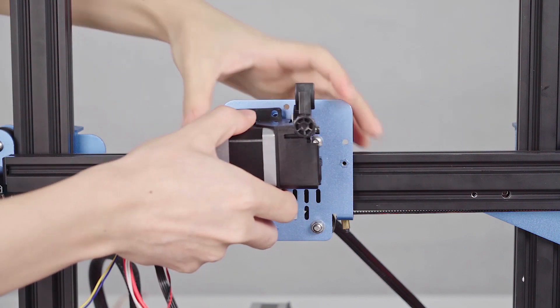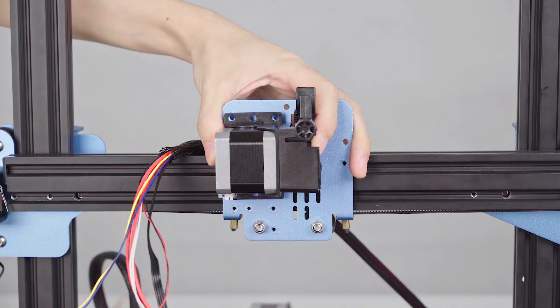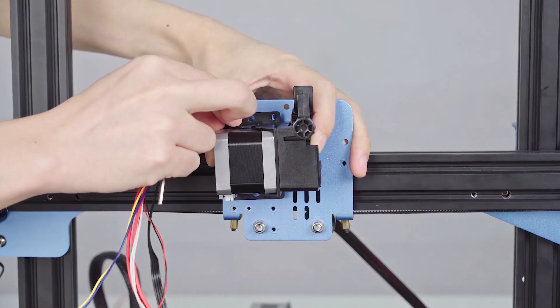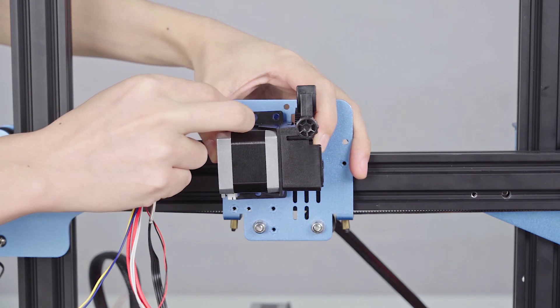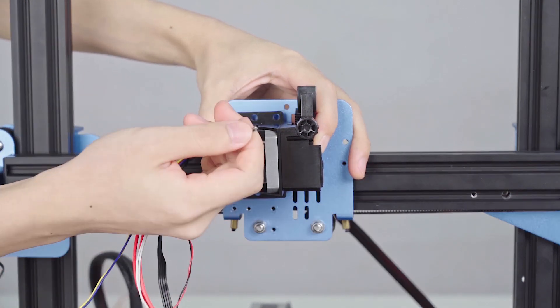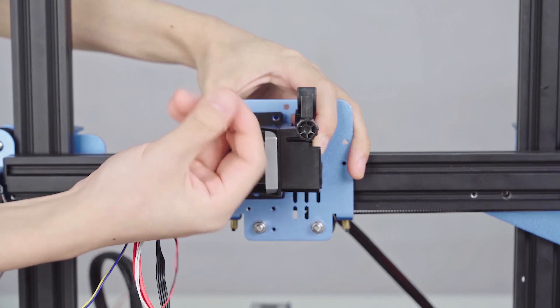Now, we are going to connect the extruder kit to the extruder board. First, we are going to screw those four nuts on the board.